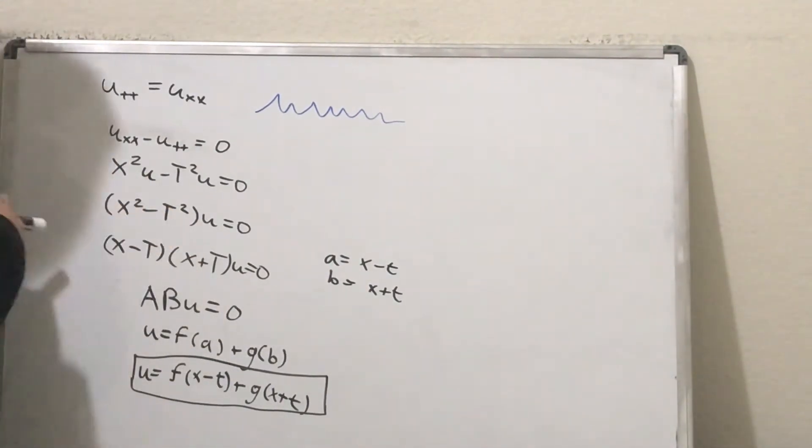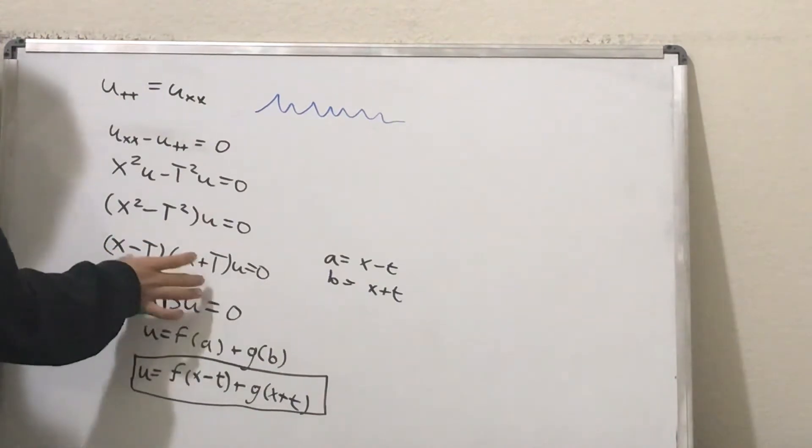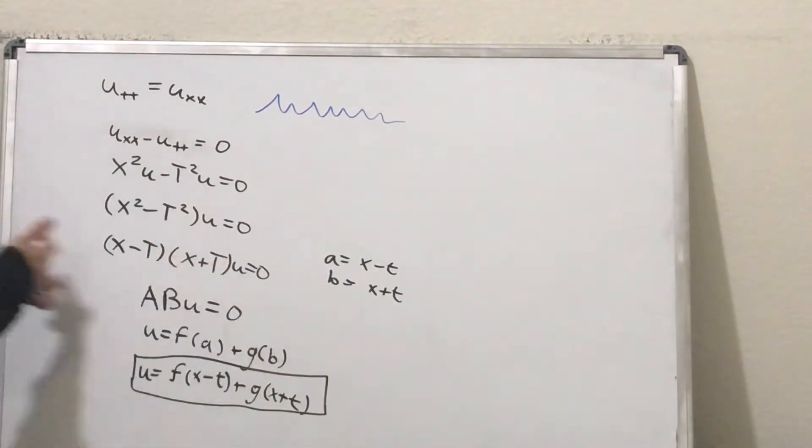And this is really cool. It blows my mind that you can do this with derivatives. But it turns out you can actually sort of factor them so that you can get an equation like this.